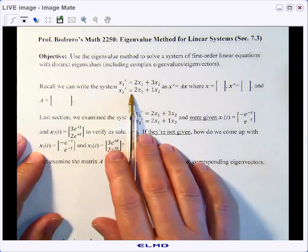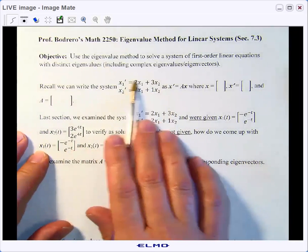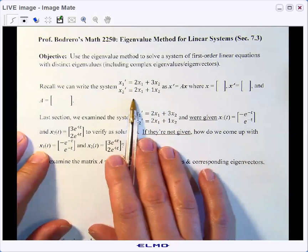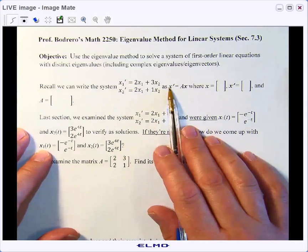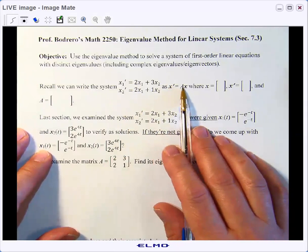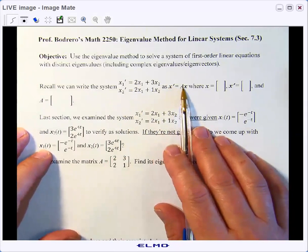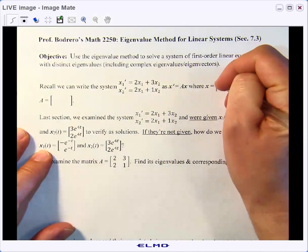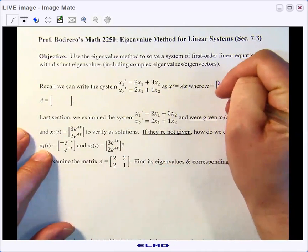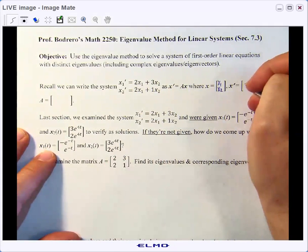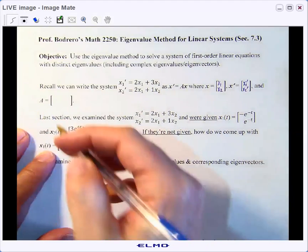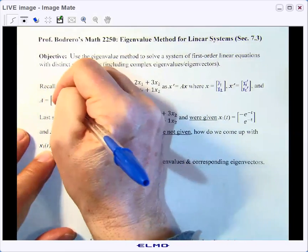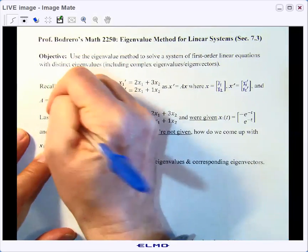Let's start off by remembering our system that we were working on last time. The homogeneous system was this guy right here, and we could write that as a matrix equation where x vector prime equals Ax, or Px, depending on what you want to call it, where x vector was the x1 function, x2 function, x prime vector is x1 prime and x2 prime, and in this case, the A or P matrix is 2, 3, 2, and 1.